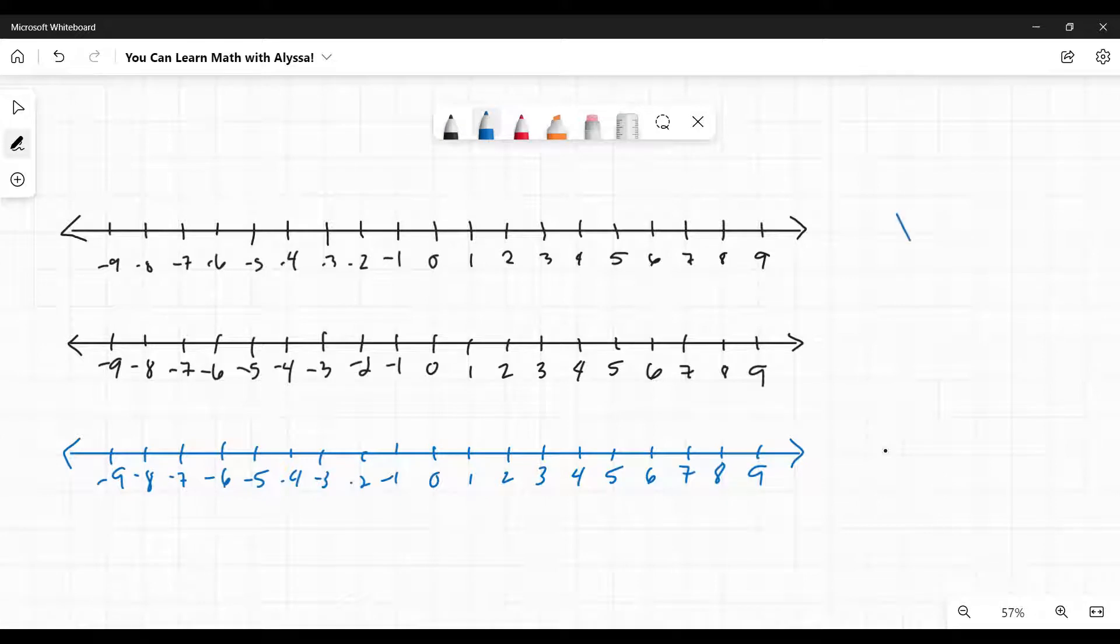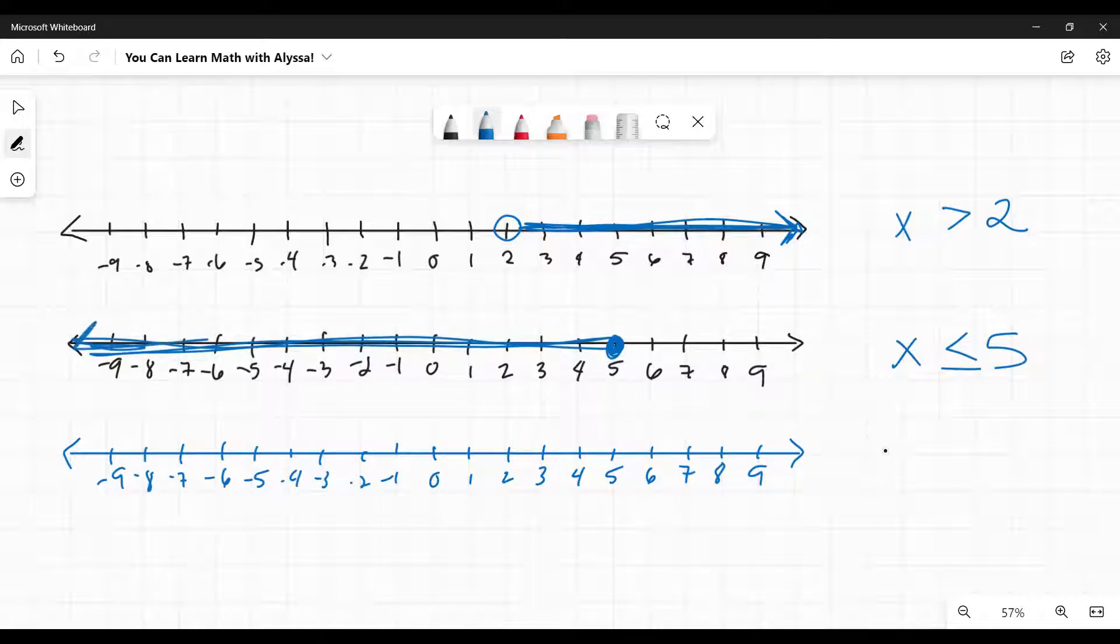So let's say I had x is greater than 2. I graph that - greater than is an open circle. And greater than means I go to the right. Now let's say I had x is less than or equal to 5. That would mean a closed circle at 5 and the less than, because that closed circle means less, for the less than or equal to or greater than or equal to. And because it's less than, I go to the left.